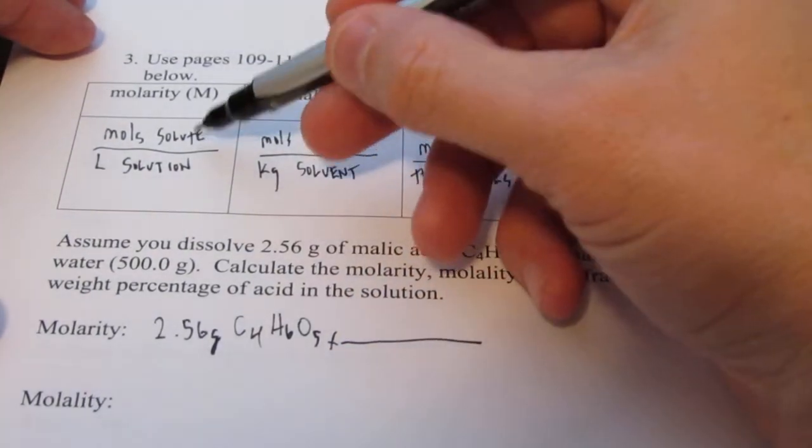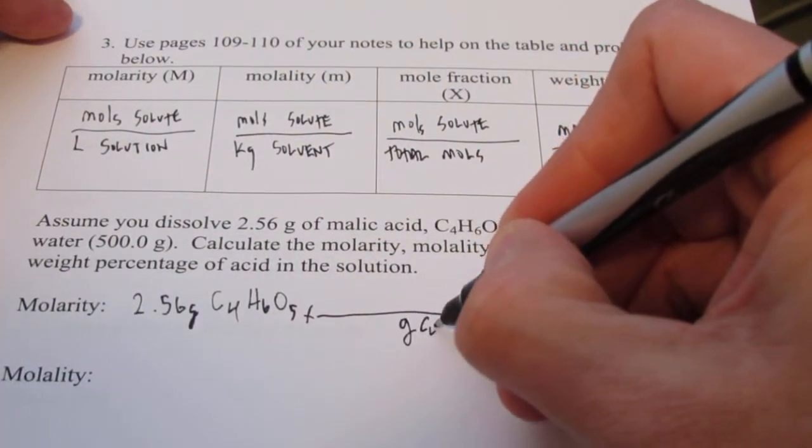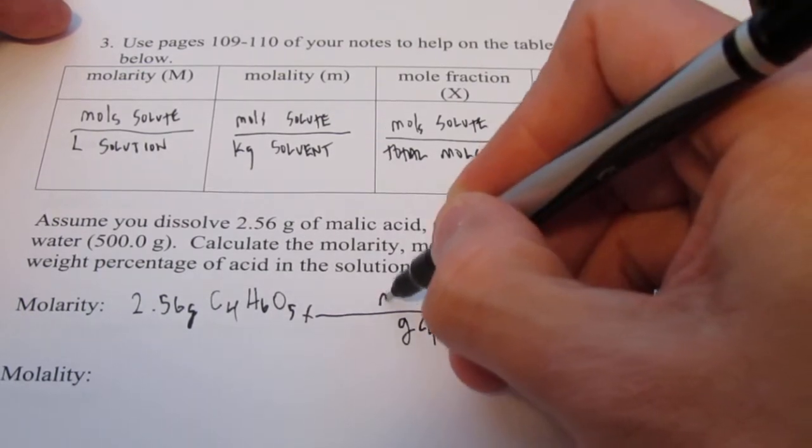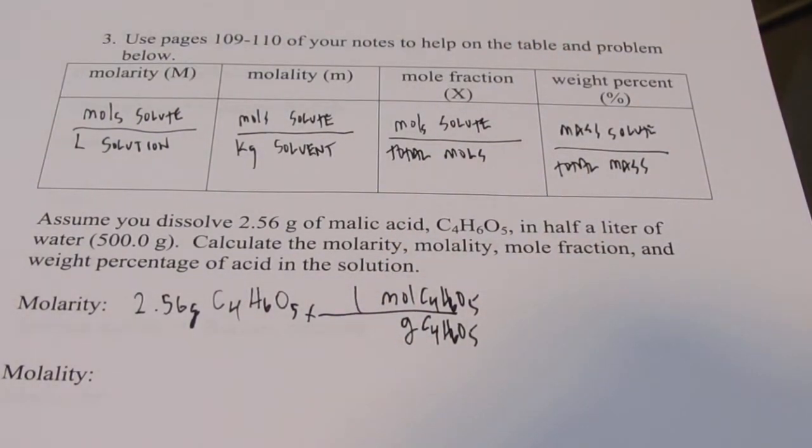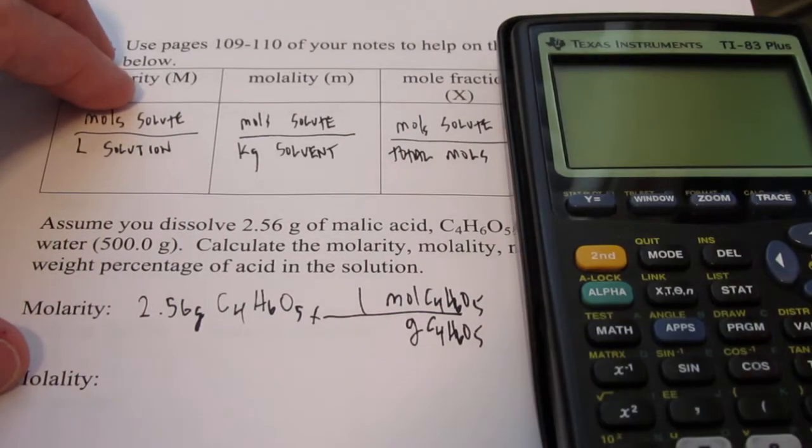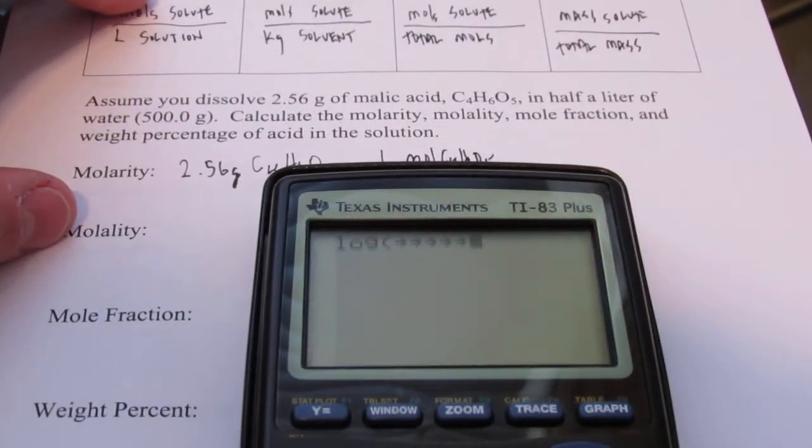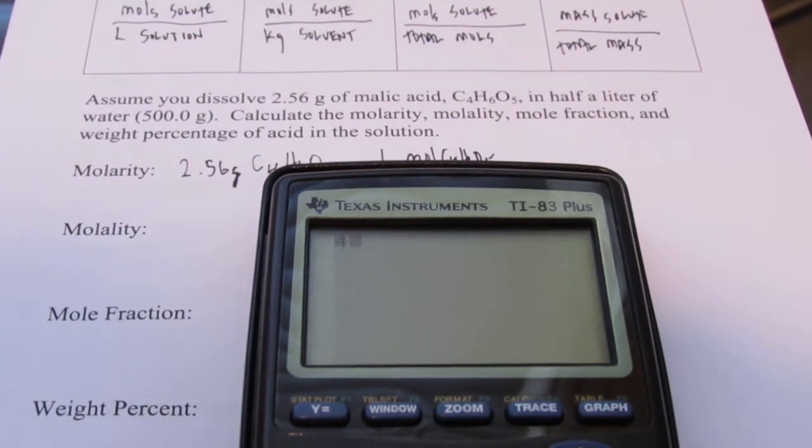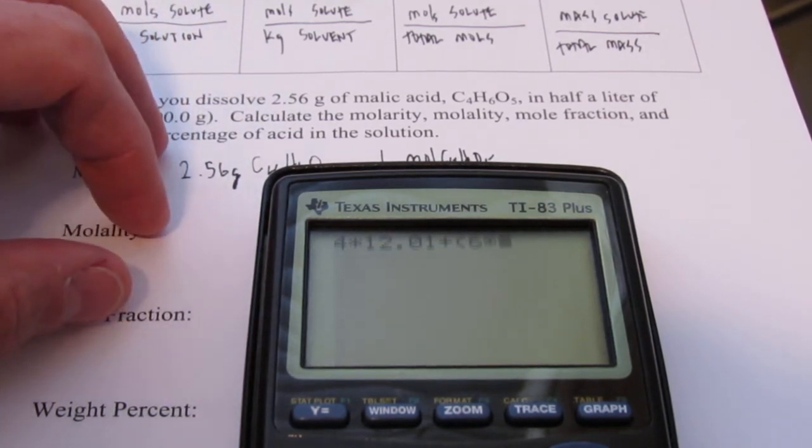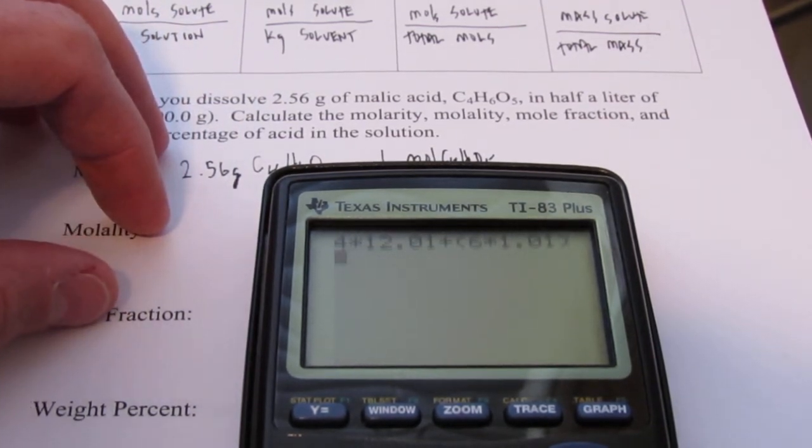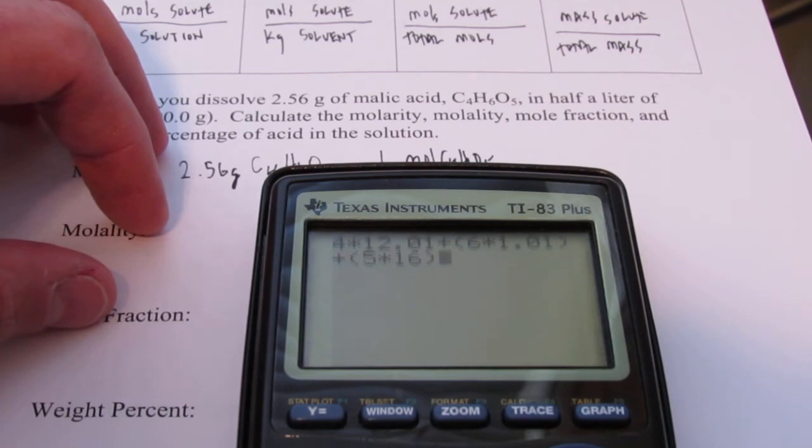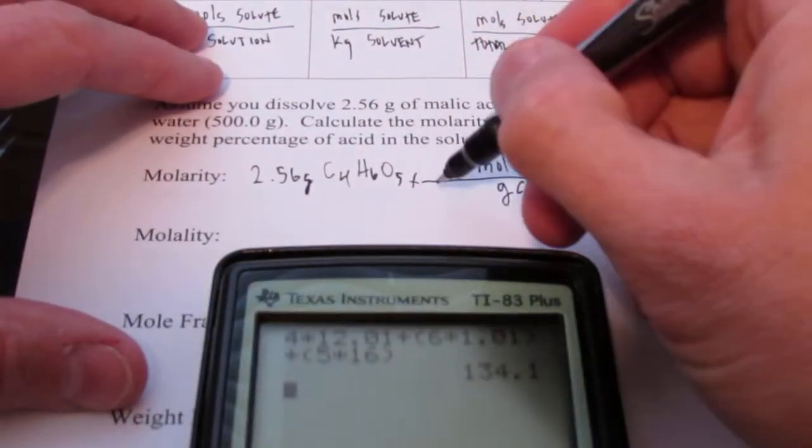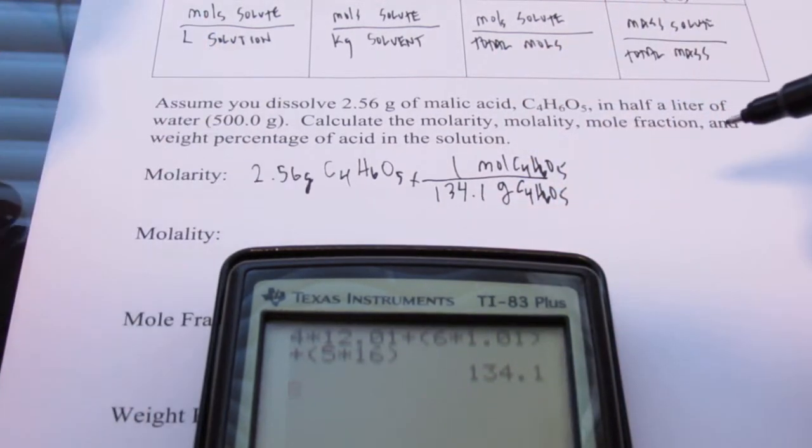Remember we want to get moles of solute. So we have to go from grams of C4H6O5 to moles of C4H6O5. I'll put a 1 by mole. Let's go ahead and figure out the molecular mass of this substance. So let's see. We've got 4 carbons. And each carbon weighs 12.01 grams per mole. We've got 6 hydrogens. And each hydrogen weighs 1.01 grams per mole. And we have 5 oxygens. And each oxygen is 16.00 grams per mole. So I get 134.1 grams per mole.